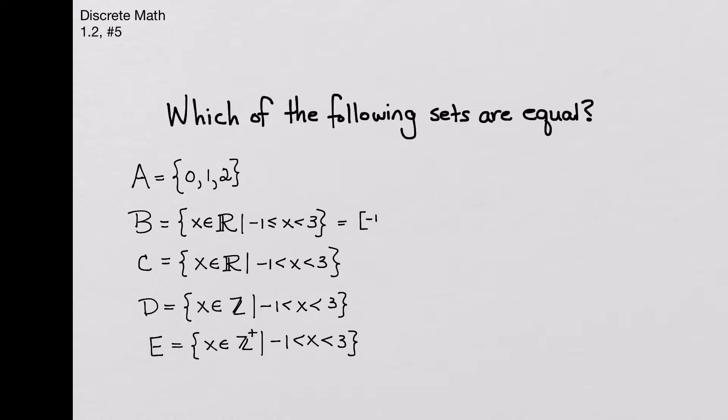I include the negative 1, and I'm including negative 1, negative 0.99999, and so on. And I'm including every real number all the way up to 3, but not including the 3 in this particular problem. So there are all kinds of decimals and things that are not in set A. So definitely A and B are not equal to each other.